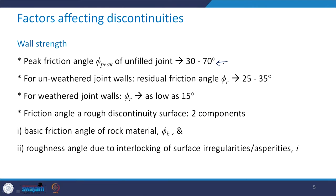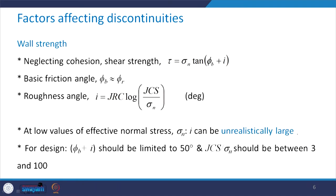The peak friction angle of the unfilled joint is usually in the range of 30 to 70 degrees. For unweathered joint walls, it goes to the residual friction angle, which is in the range of 25 to 35 degrees. For weathered joint walls, this residual friction angle can be as low as 15 degrees. The friction angle of a rough discontinuity surface has two components: the basic friction angle of the rock material represented by phi_B, and the roughness angle due to interlocking of surface irregularities or asperities, represented by I.